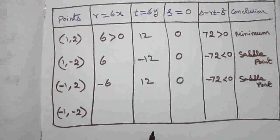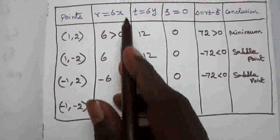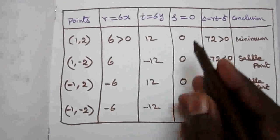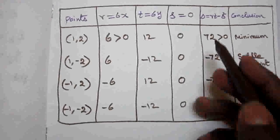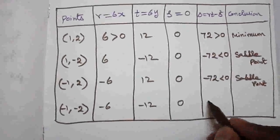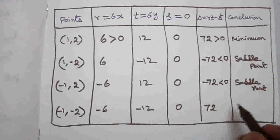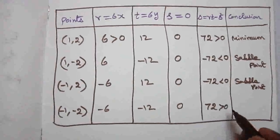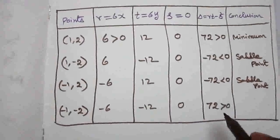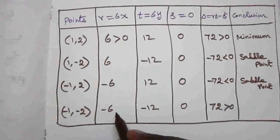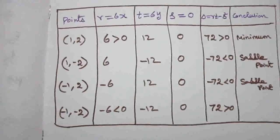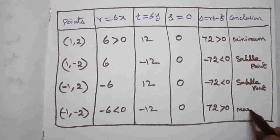For point (−1, −2): r = 6(−1) = −6, t = 6(−2) = −12, s = 0. Delta = (−6) × (−12) − 0 = 72, which is greater than zero. Since r = −6 < 0, the function is maximum at (−1, −2).